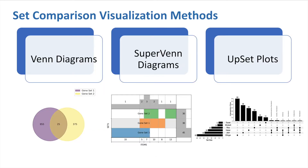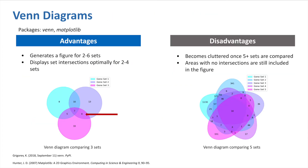There are three visualization options available in the Aperture: Venn diagrams, super Venn diagrams, and upset plots. Venn diagrams can be created to display the intersections from 2 to 6 user-inputted gene or drug sets. However, Venn diagrams are best suited for when you want to compare 2 to 4 sets, since visualizing them is really clear and easy to understand. Once you start comparing 5 or more sets, the Venn diagram often becomes really cluttered.